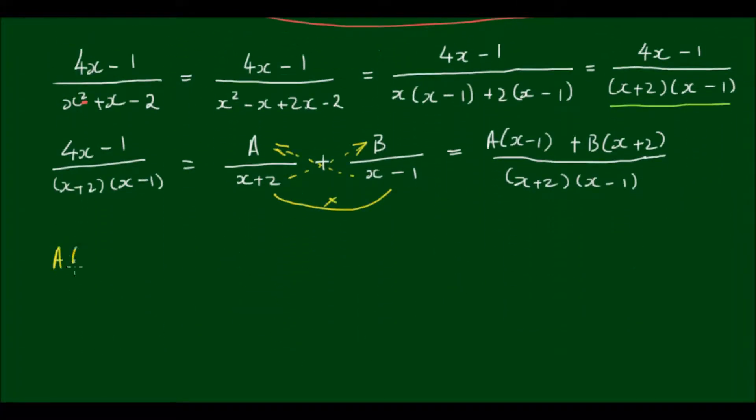And now I can say that A times (x-1) plus B times (x+2) is equal to 4x minus 1. So I'm just equating the two numerators together.